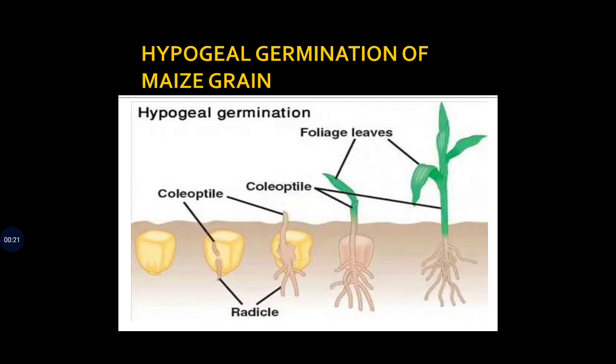Pea seed was dicotyledonous, meaning the seed can be broken down into two equal halves. We have seen dicot hypogeal germination, and this time we're going to see the monocot - maize grain. Maize is monocot and the seed cannot be broken into two equal halves.